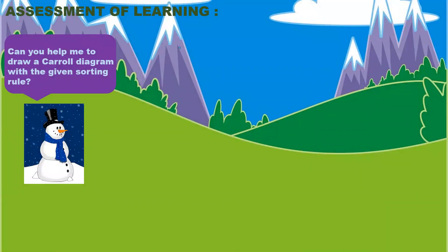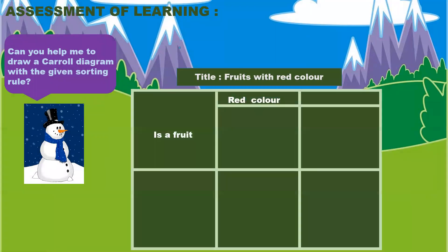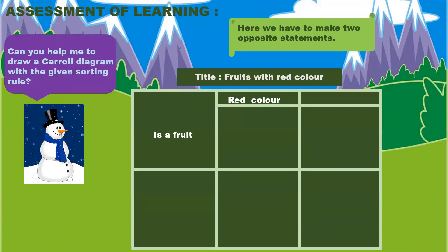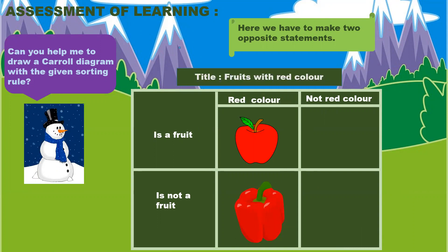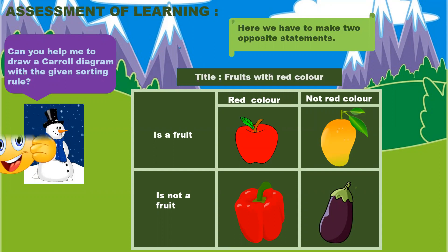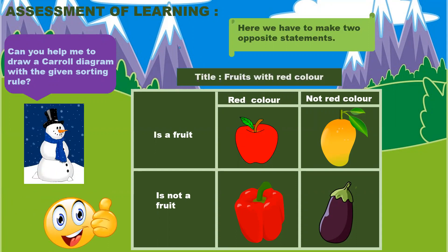Assessment of learning. Can you help me to draw a cattle diagram with a given sorting rule? Title: fruits with red color. Is a fruit and red in color? Here we have to make two opposite statements: is not a fruit, not red color. Apple is a fruit and it is red in color. Capsicum is not a fruit yet it is red in color. A mango is a fruit but it is not red in color. Capsicum is not a fruit and not red in color. Good job!